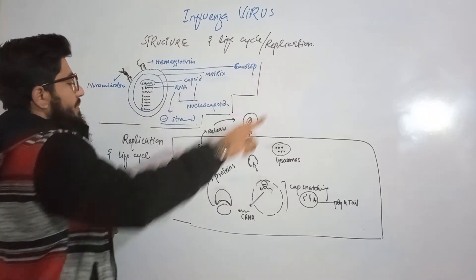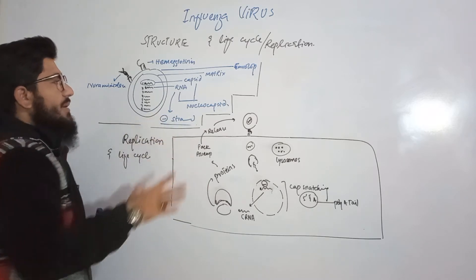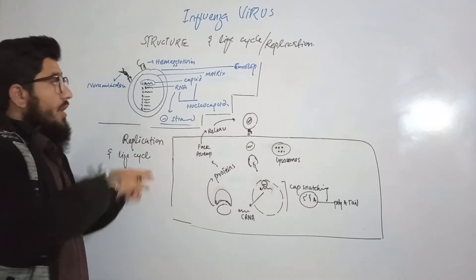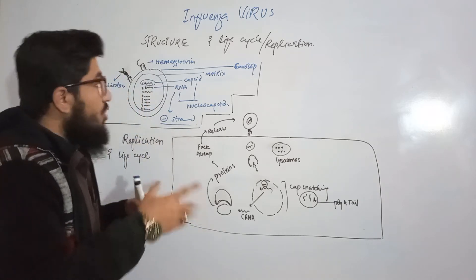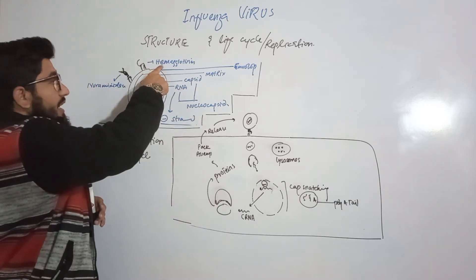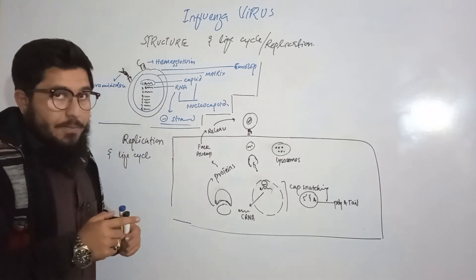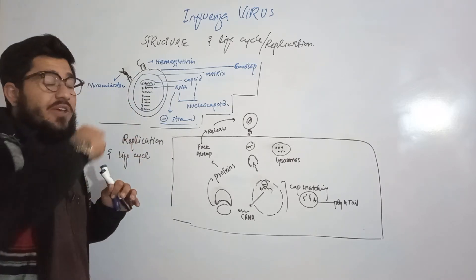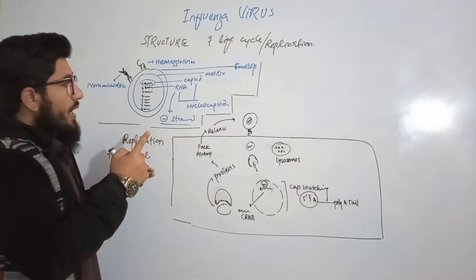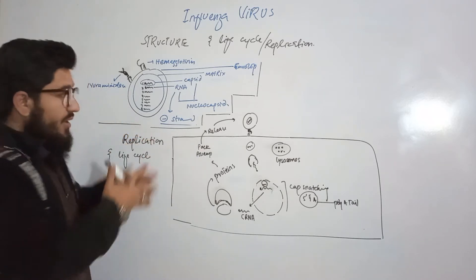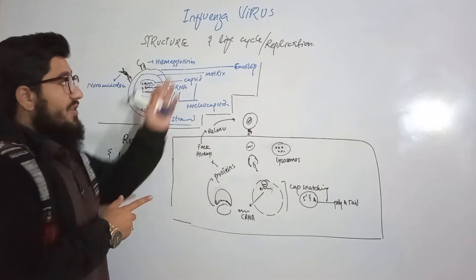So the influenza virus is an enveloped RNA virus with a negative sense single-stranded RNA. On this envelope we have two important proteins: number one, hemagglutinin, and number two, neuraminidase. These proteins cover the entire virus. Now let's understand the functions of each component through the life cycle or replication of the influenza virus.